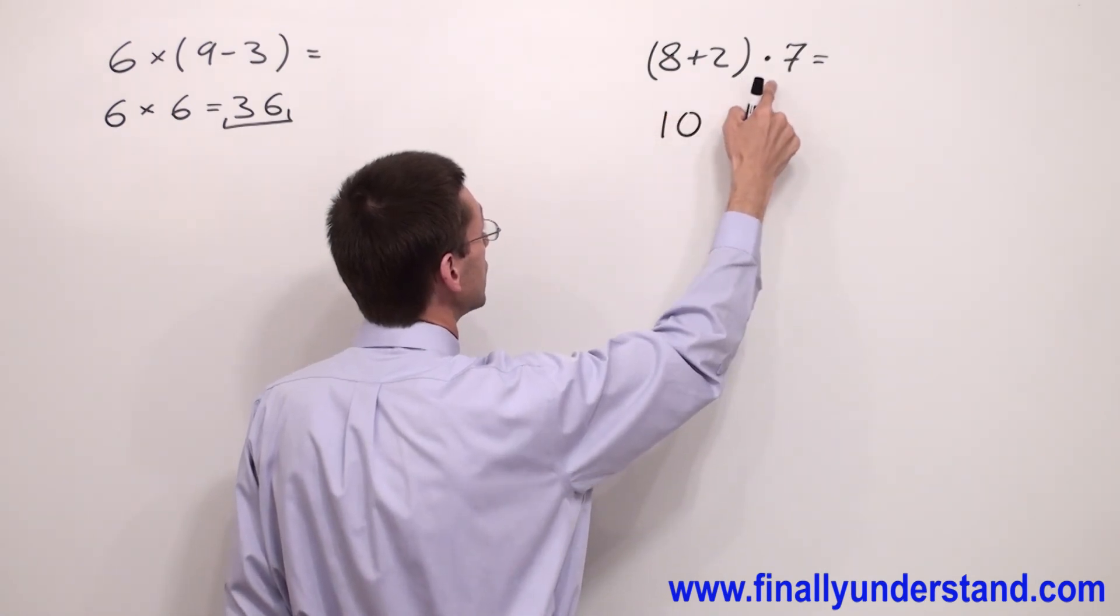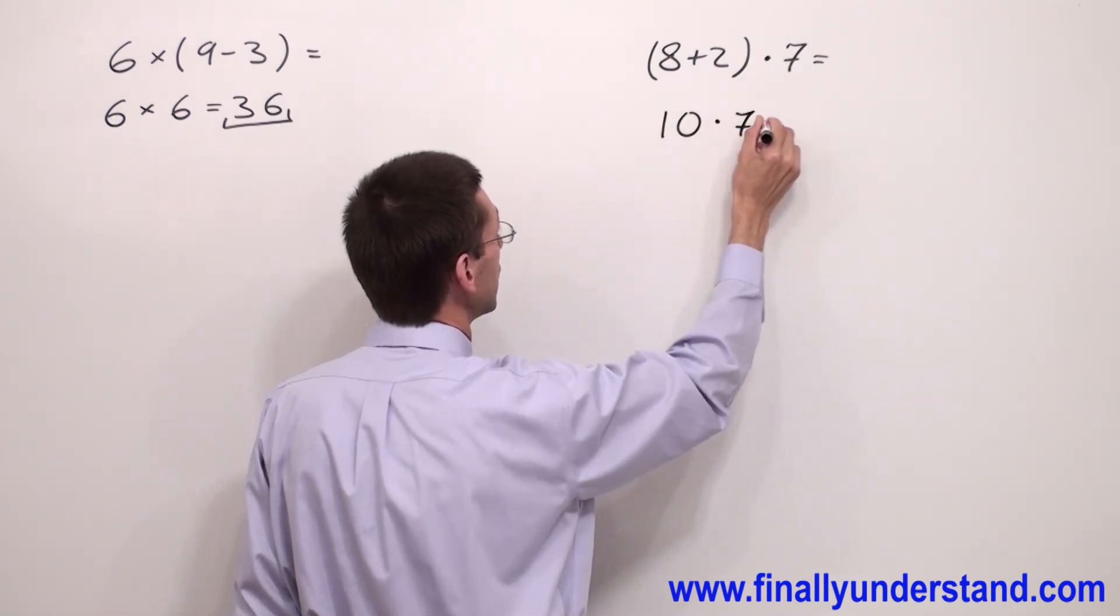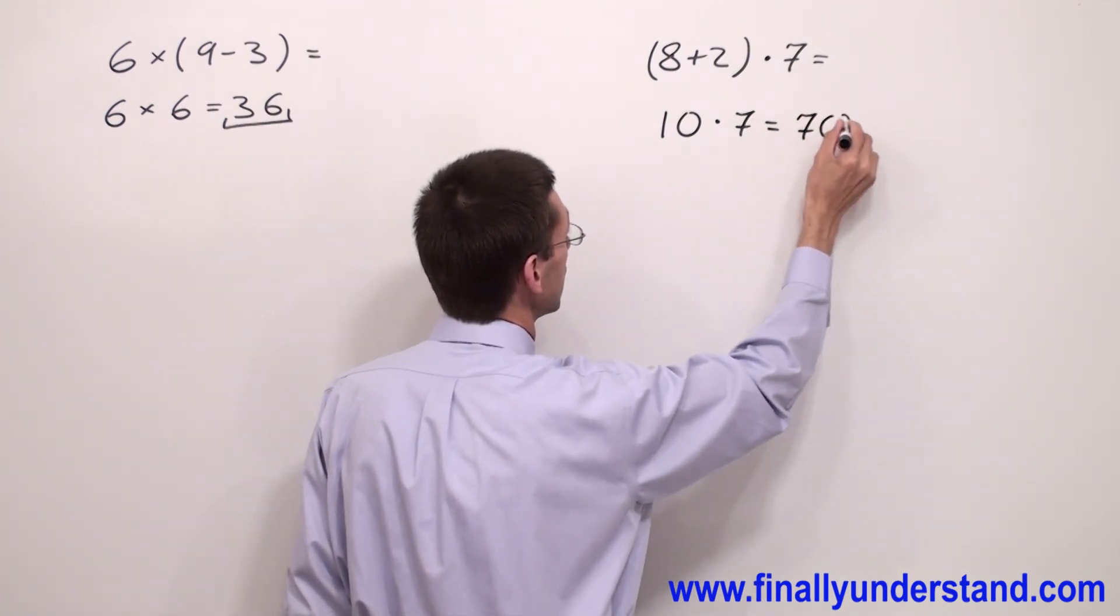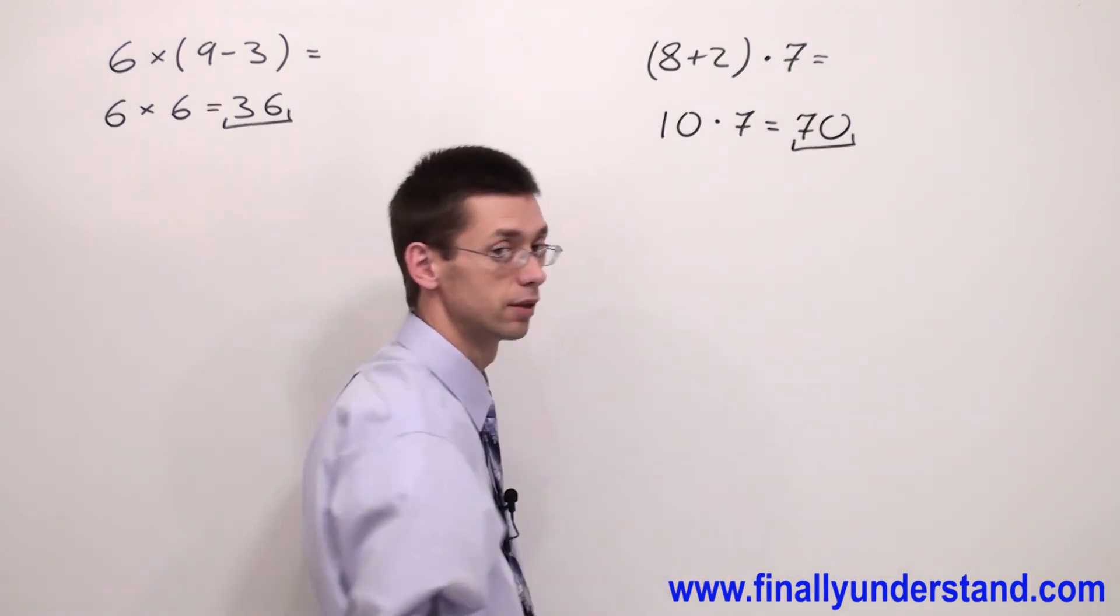10 times 7. 10 times 7 is equal to 70. And this is the solution to my problem. Thank you.